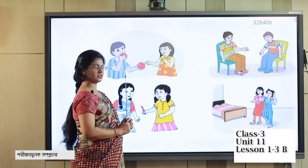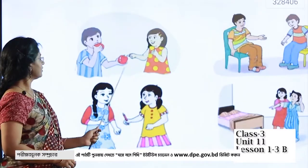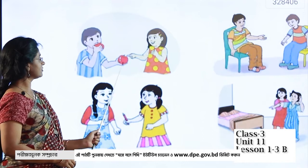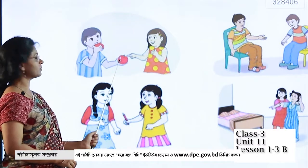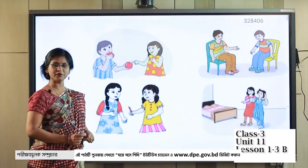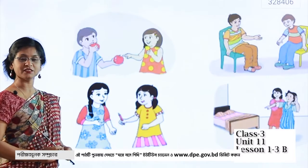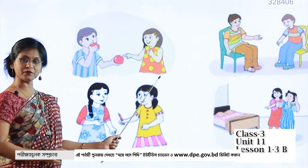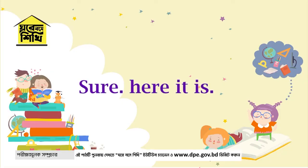Let us go to the first picture. She wants to take this apple. What will she say? She will say: 'Can you give me an apple?' You can see that he is going to give it. The response will be: 'Sure, here it is.' Please repeat after me — 'Can you give me an apple?' 'Sure, here it is.'